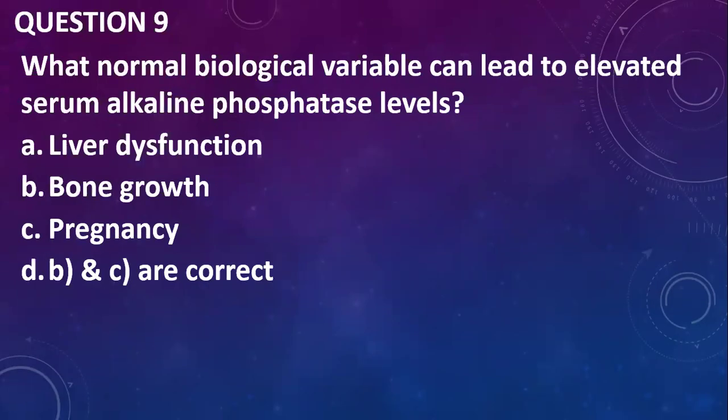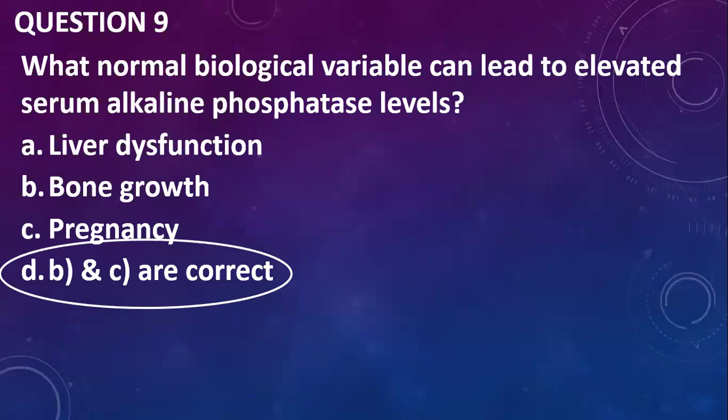Question nine: what normal biological variable can lead to elevated serum alkaline phosphatase level? Liver dysfunction does cause it, but it's pathological, so we don't go with that. Bone growth — yes. Pregnancy — yes. So I will go with bone growth and pregnancy, because alkaline phosphatase levels increase in children who are rapidly growing, as well as in pregnancy — it is produced by the placenta, giving you placental alkaline phosphatase.